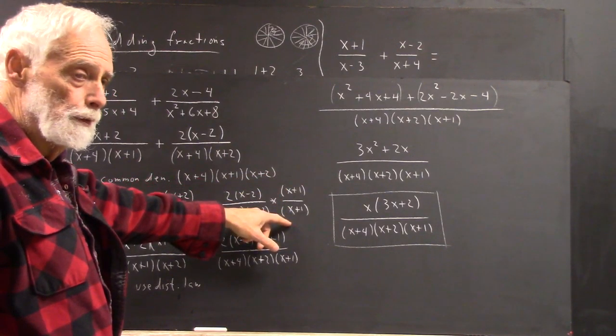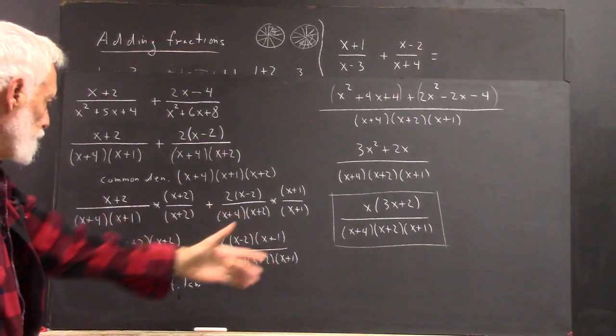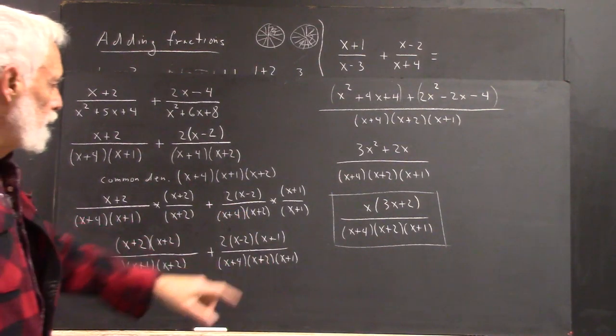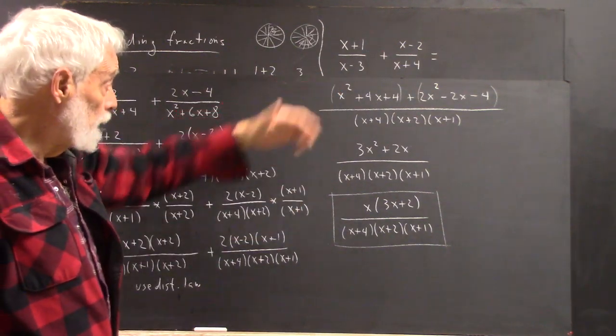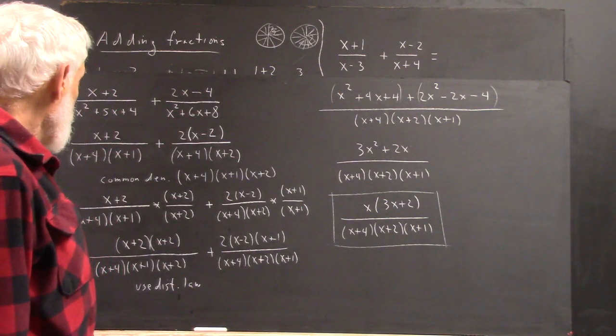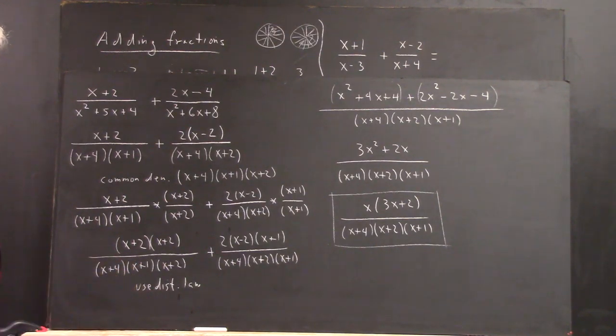So, we take the first fraction. We need an x plus 2 in the denominator, so we multiply by x plus 2 over x plus 2. We take the second rational expression. We're missing the x plus 1 in the denominator, so we multiply by x plus 1 over x plus 1.